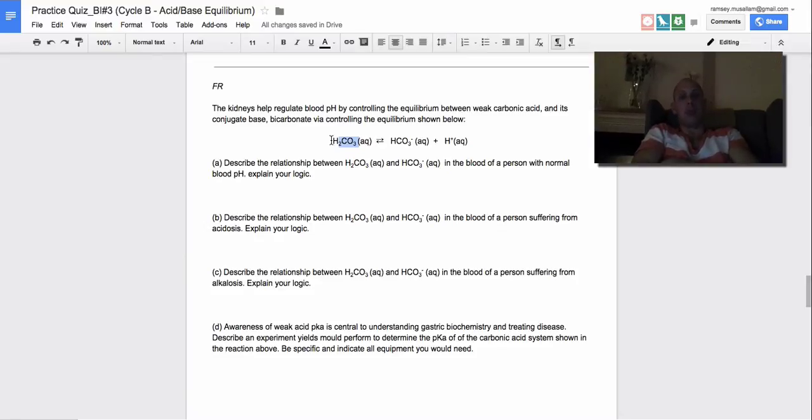And awareness of weak acid pKa - I'm going to go through and just read this - is central to understanding gastric biochemistry and treating disease. True story. And we want to know how strong those acids are. We want to know how much they give up hydrogen because we're going to need to know that information about each drug you put in your body. Because if your kidneys - and this is why drugs can be really hard on your kidneys - your kidneys or any other part of your body that is responsible for controlling pH is doing that because it understands the Ka or the pKa of each acid.